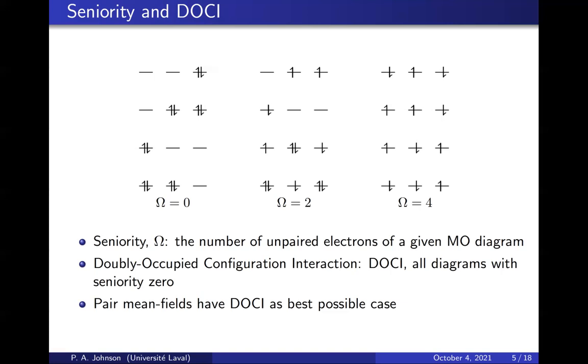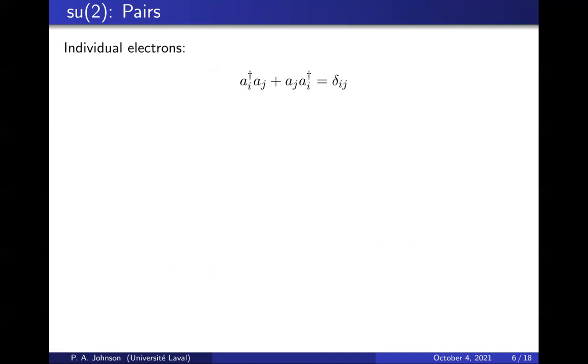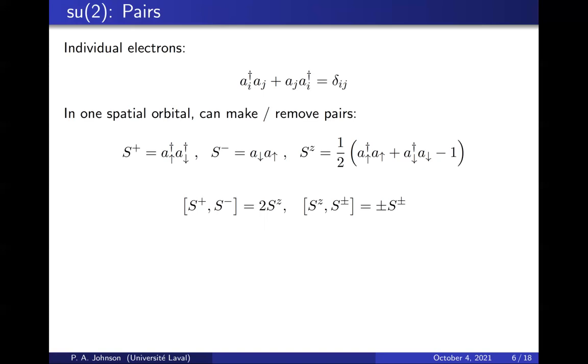Let's look briefly at how we build geminals. For individual electrons, we have second quantized operators creating and removing orbitals. There's two sets of objects, A daggers which create and A's that remove. They have simple anticommutation relations that are Kronecker delta. For pairs, it's only marginally more difficult. You have three objects instead of two. You have S plus which builds a pair, S minus that removes a pair, and Sz that counts the number of pairs. S plus, S minus, and Sz have very easy commutation relations that you will recognize from a quantum mechanics course.